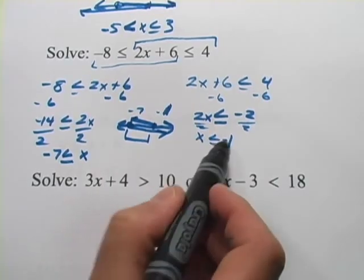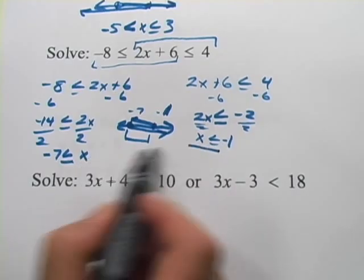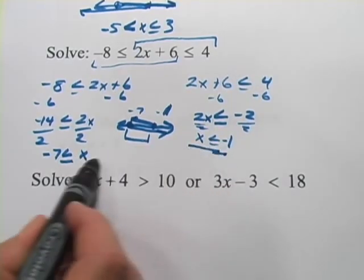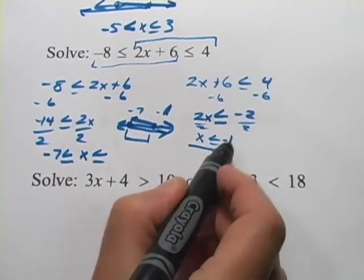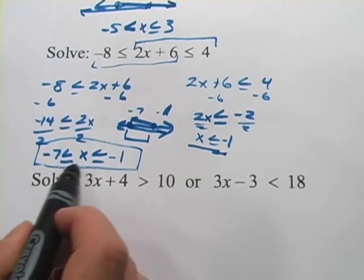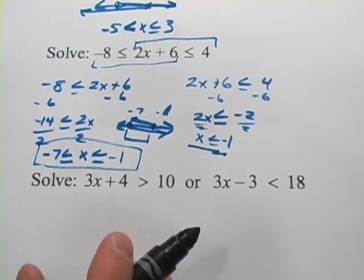And if you notice, you can just take this part right here and bring it on over because you've got the x in there already. So just write the rest of that one and you've got it. So x is between negative 7 and negative 1 inclusive.